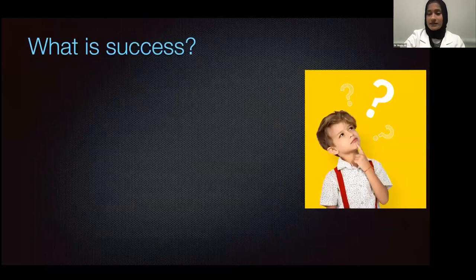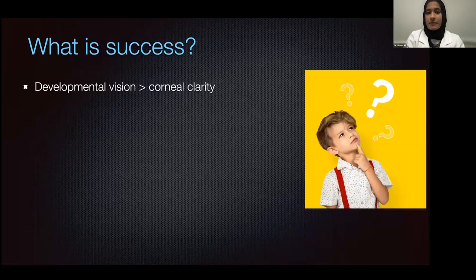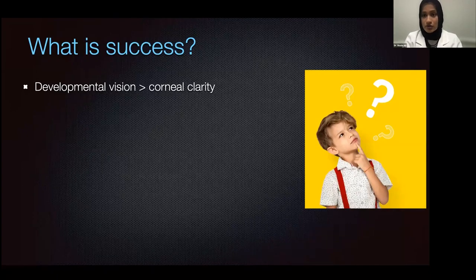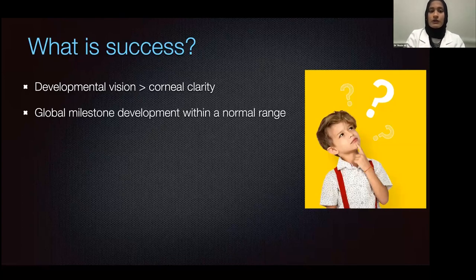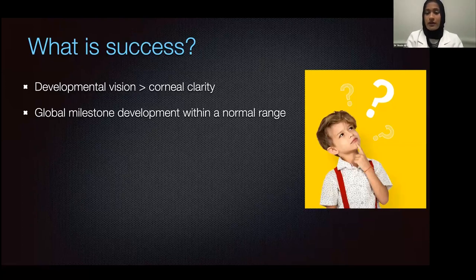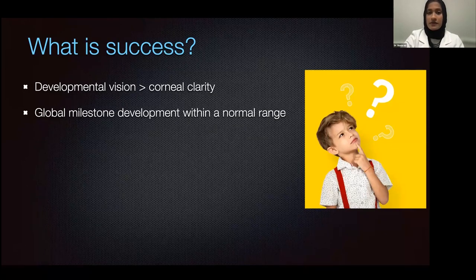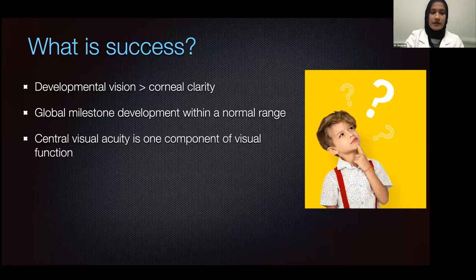What is success? Success for pediatric patients is very different from success for adult patients. What we are looking at is developmental vision — it's more important than corneal clarity. Some of these patients will come in with very dense opacities and are able to function much more than you would expect. What we're looking for is their global milestone development within a normal range. Are they able to walk on their own? Do they have ambulatory vision? Are they able to see colors and contrast? Those types of things are more important than a number on the Snellen chart.